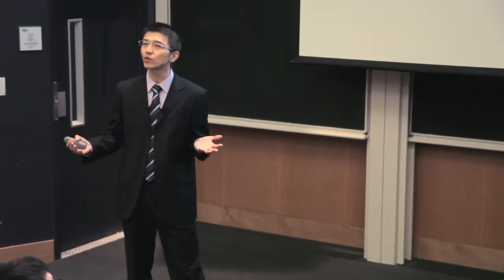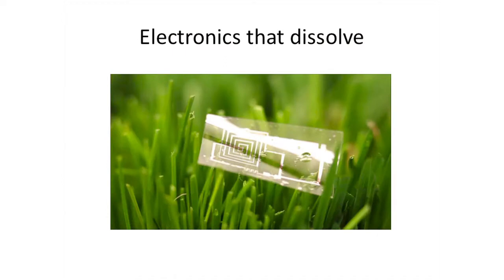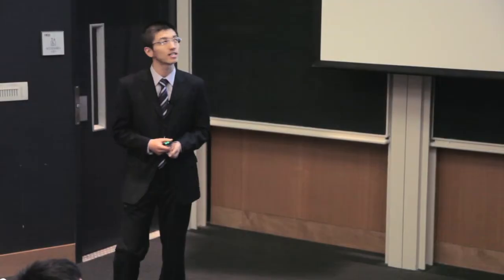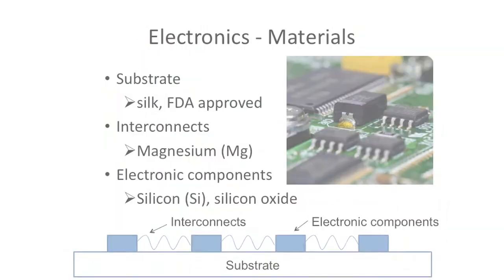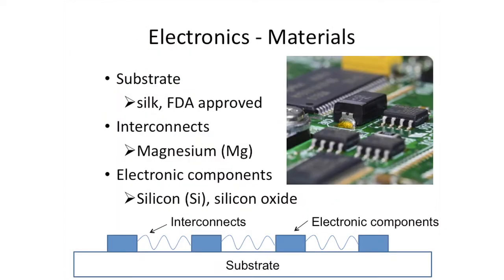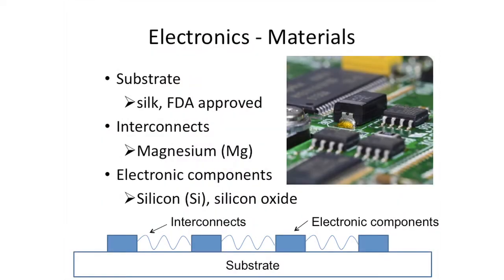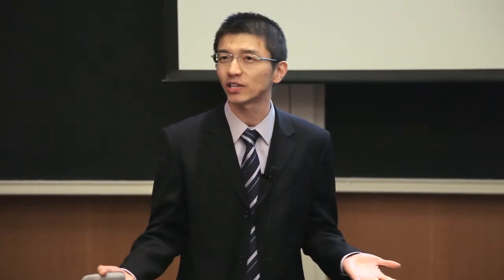What does a typical device look like? This is pretty much what it looks like, but to make life easier, we have this simplified version. In summary, we have three components. First, we have to use this substrate where we can build our device on. Here, this isn't a problem because we use silk and silk is already approved by FDA. Next, we have the magnesium for the interconnection to connect all these components together. This one is also good because magnesium is also widely used in the biomedical industry.